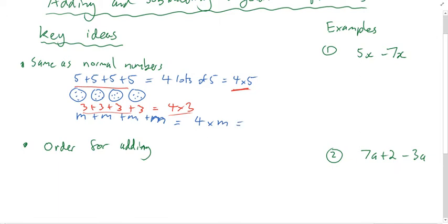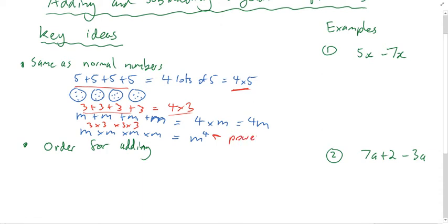In algebra we don't write the times sign, so it's just four m. Some people get confused and think it's a power — m to the power of four — but that's different. We only get a power when we multiply: m times m times m times m equals m to the power of four.